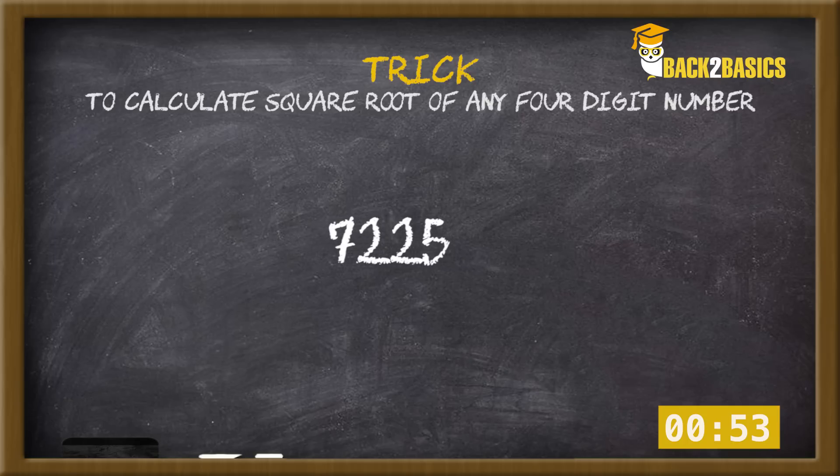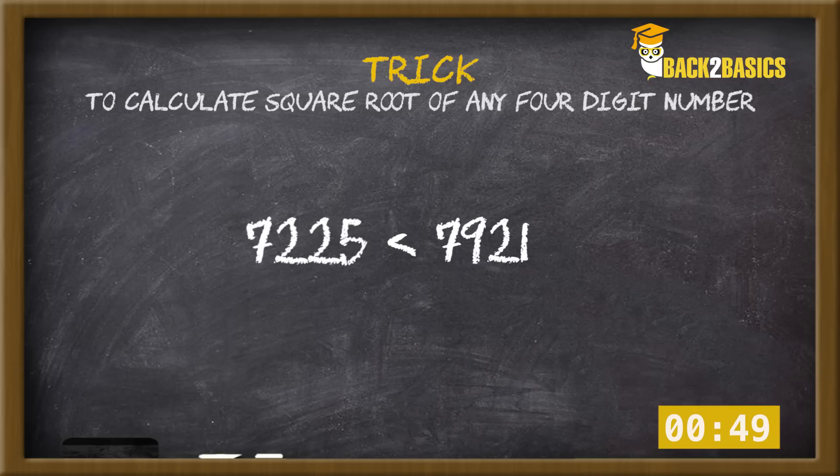Step 5: Compare 7225 with our number, which is 7921. As 7921 is greater than 7225, our answer is 89.